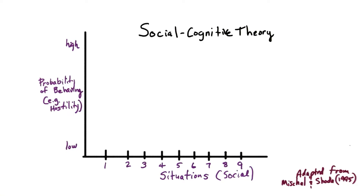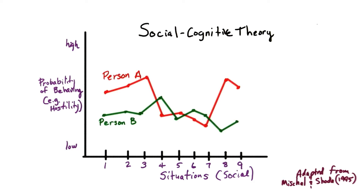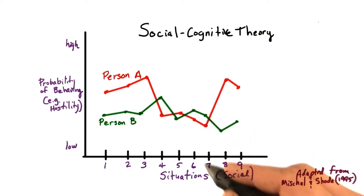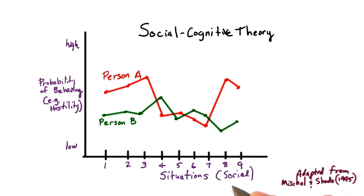In order to understand social cognitive theories of personality, let's look at this graph of two hypothetical people, A and B. The basic idea is that these two people bring different interpretations to each situation — in this case, nine different situations.